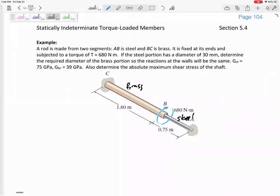Okay, so it's not exactly like the scenario I was putting up a second ago. This one tells me if I've got this 680 and I want the reactions of A and C to be the same, then the torque at A would be 340 and 340.